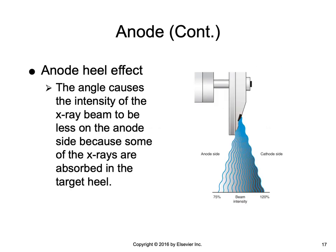Although the line focus principle achieves a balance between heat area and projected focal spot, it is not without trade-offs. When the target angle becomes too small, the x-ray beam area may not be large enough to fully expose a 14 by 17 IR at a 40-inch SID. Additionally, the angle causes the intensity of the x-ray beam to be less on the anode side because the heel of the target is in the path of the beam. The x-rays on the anode side must first penetrate a portion of the target before exiting the tube; some do not have the energy to do so and are absorbed in the target heel, reducing the intensity on the anode side. This phenomenon is called the anode heel effect.